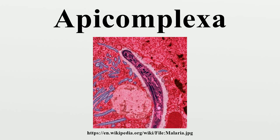The cell is surrounded by a pellicle of three membrane layers penetrated by micropores. Replication: mitosis is usually closed, with an intranuclear spindle. In some species it is open at the poles. Cell division is usually by schizogony. Meiosis occurs in the zygote.